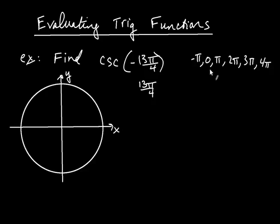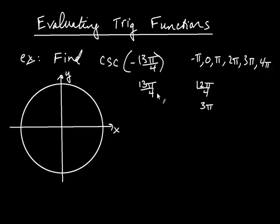We're aiming for some integer multiple of π. When I look at 13π over 4, I say to myself: 4 doesn't go into 13, but 4 certainly goes into 12. So 12π over 4 is very close to 13π over 4. Now 12π over 4 is 3π. Of course 13π over 4 is not equal to 12π over 4 — I'd have to add π over 4 to it. So 12π over 4 plus π over 4 is 13π over 4, and 12π over 4, that's easy to work with — that's 3π.